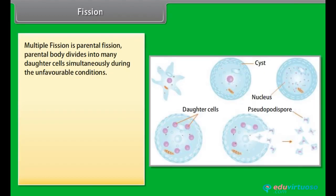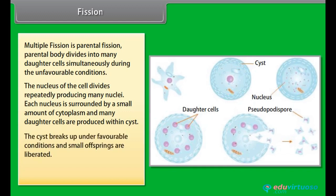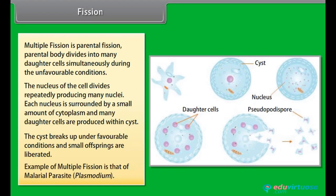Multiple fission is when the parental body divides into many daughter cells simultaneously during unfavorable conditions. The nucleus of the cell divides repeatedly, producing many nuclei. Each nucleus is surrounded by a small amount of cytoplasm, and many daughter cells are produced within a cyst. The cyst breaks up under favorable conditions and small offspring are liberated. An example of multiple fission is the malaria parasite, Plasmodium.